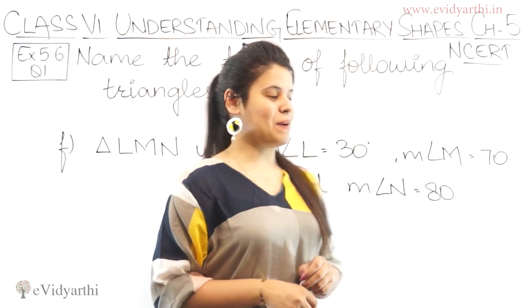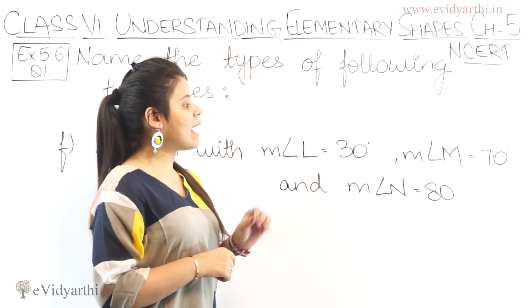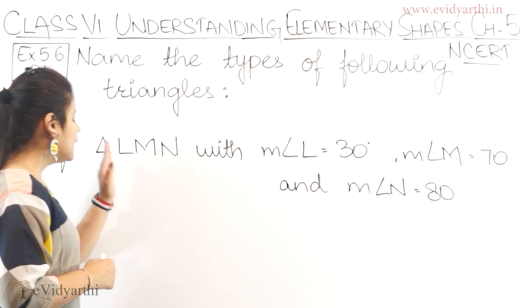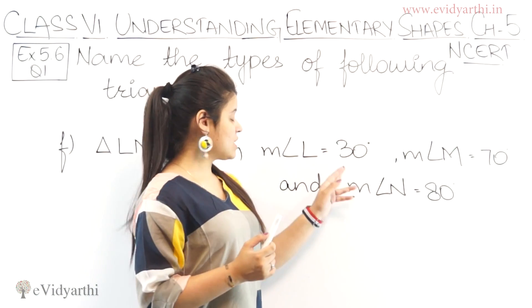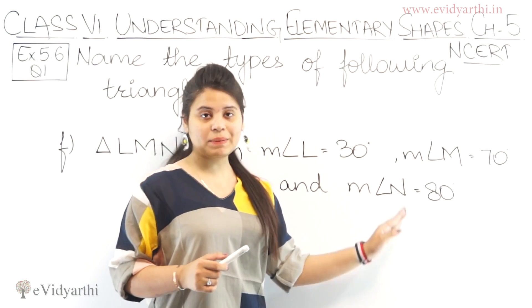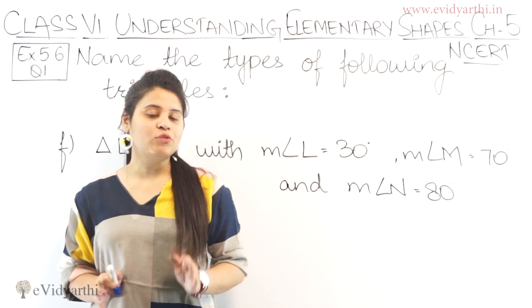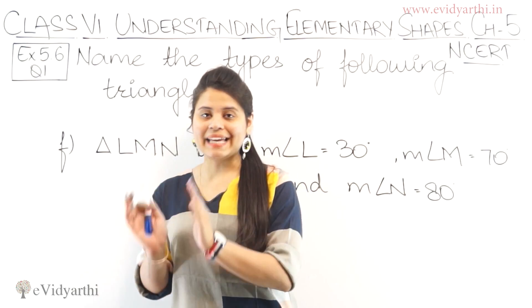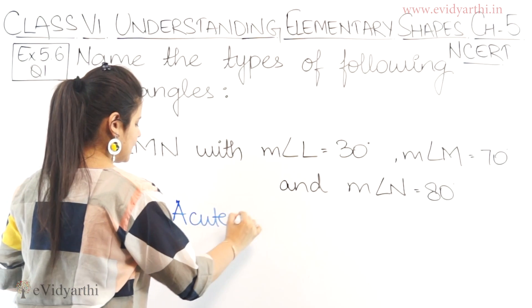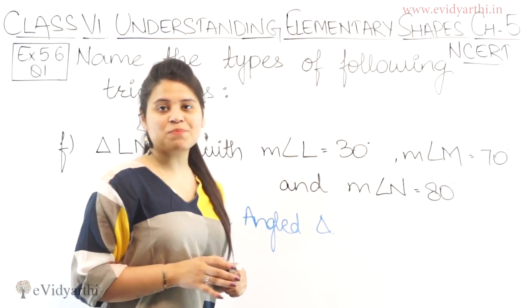Coming to the last part F, we have triangle LMN where angle L = 30 degrees, angle M = 70 degrees, and angle N = 80 degrees. We can see that all three angles — 30, 70 and 80 — are less than 90 degrees, meaning all three angles are acute. Since all three angles of the triangle are acute, this is an acute angled triangle.